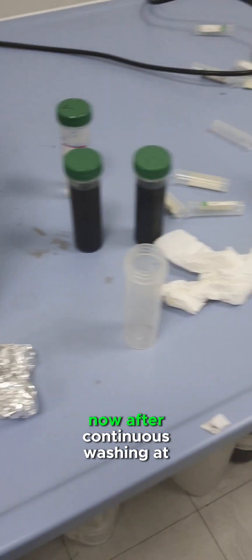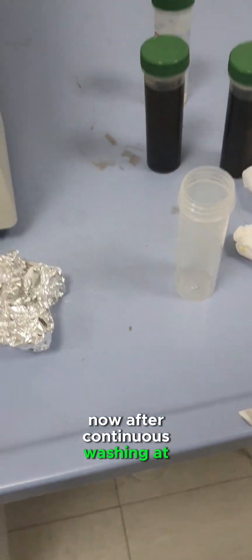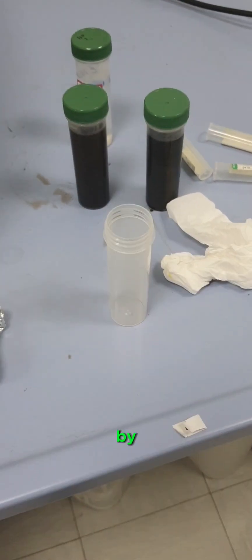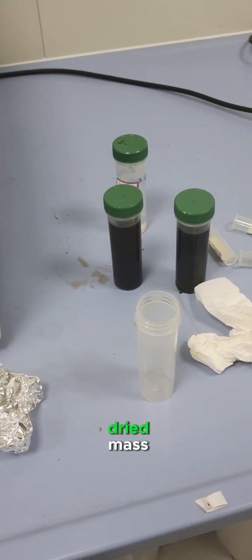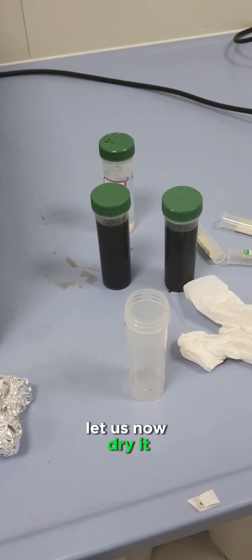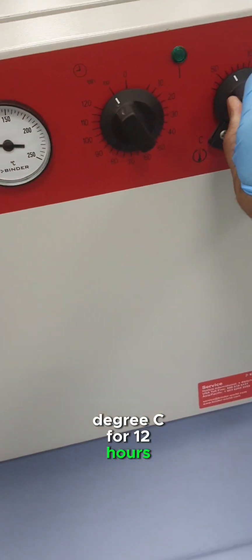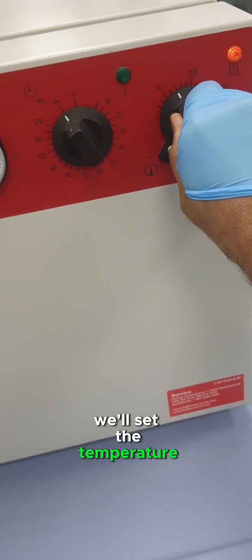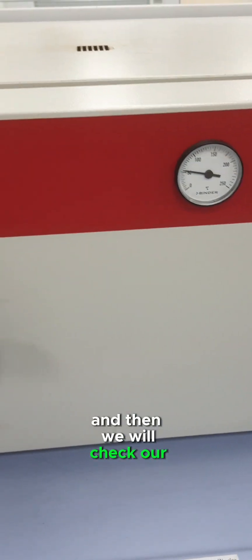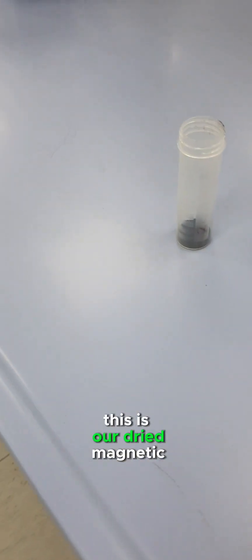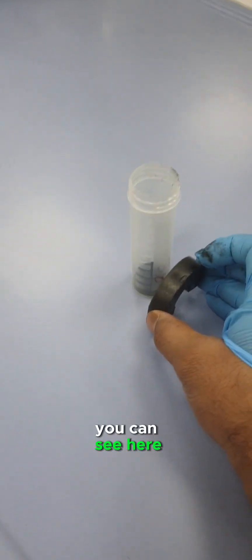After constant continuous washing, at the end we'll wash with acetone and then we will see the dried mass. Let us now dry this. I'll dry this at 70 degrees Celsius for 12 hours. We'll set the temperature and then we will check our magnetic nanoparticles. This is our dried magnetic nanoparticles you can see here.